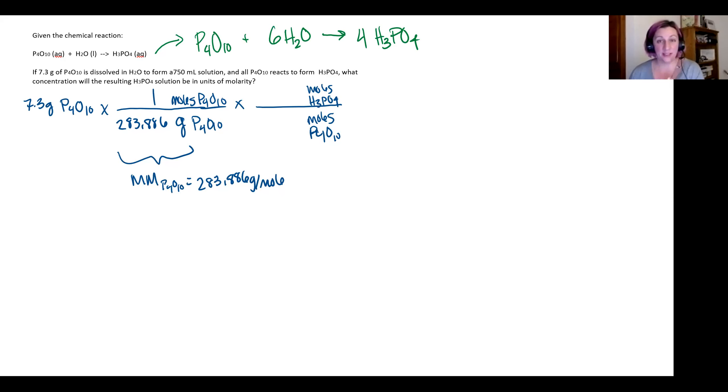Now it's time to balance my oxygens. Looking at this from my reactants, I've got 10 coming from my P4O10, and then I have six times my subscript of one on my oxygen for six, for a total of 16 oxygen.